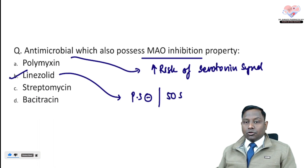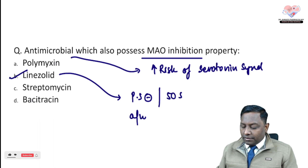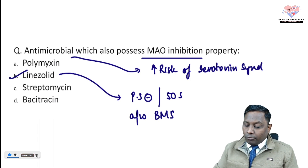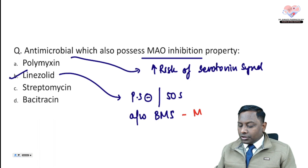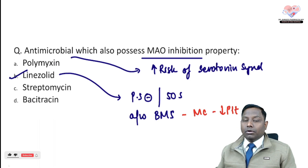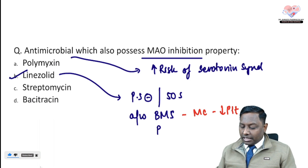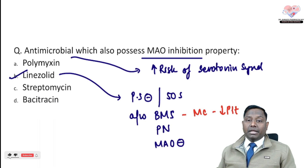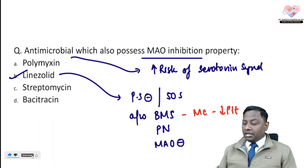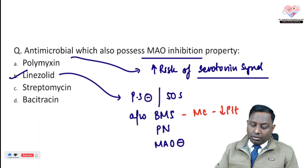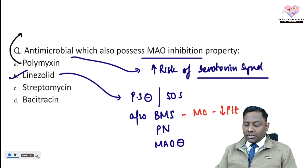Linezolid is associated with bone marrow suppression. The most common feature under bone marrow suppression is decreased platelet count — thrombocytopenia. Apart from that, it can also lead to peripheral neuropathy. Because of its MAO inhibiting property, it increases the risk of serotonin syndrome. Other options are simply not associated with such property.